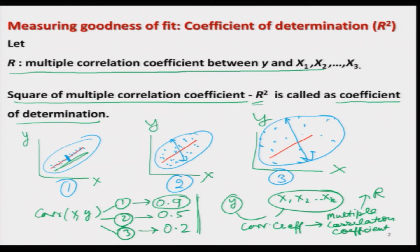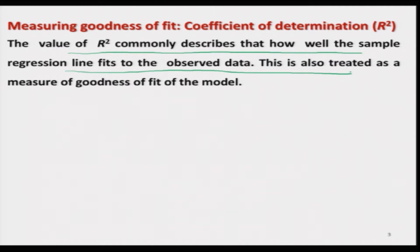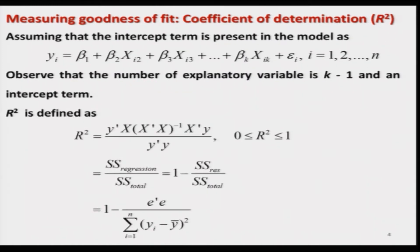If R is the multiple correlation coefficient between y and x₁, x₂, …, xₖ, then we take the square of this multiple correlation coefficient, that is R², and we call it the coefficient of determination. This value can be used to judge the goodness of fit of the model — that means, on the basis of the given data, whatever model you have obtained, the value of R² will indicate whether the model is good or bad. R² commonly describes how well the sample regression line fits the observed data and is treated as a measure of goodness of fit.